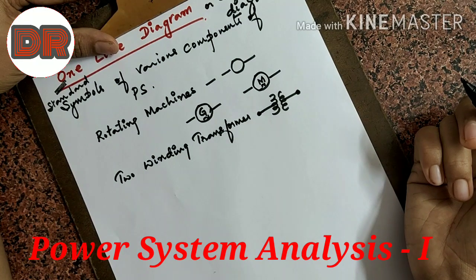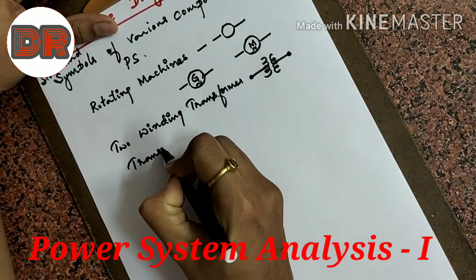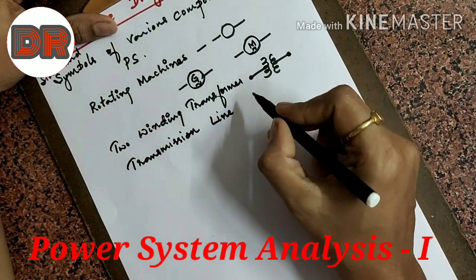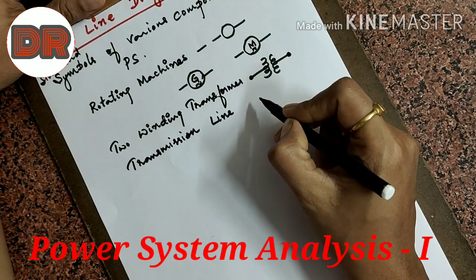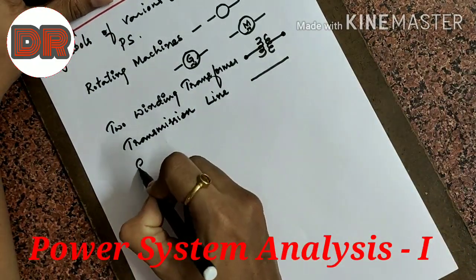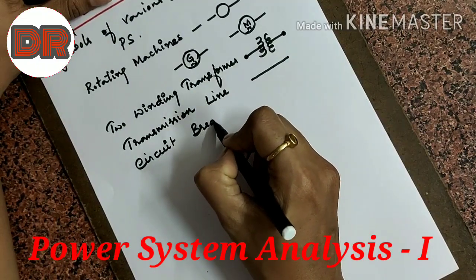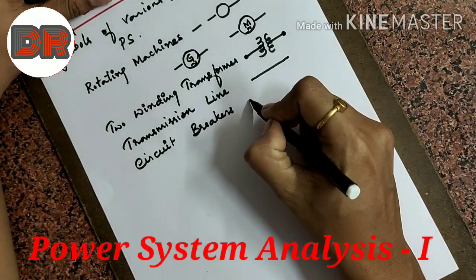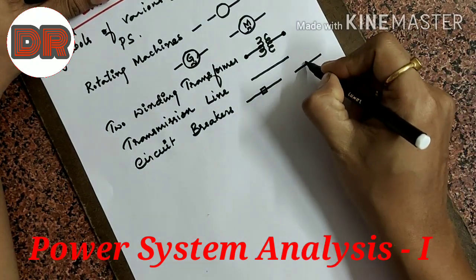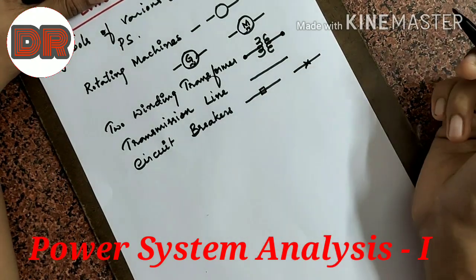Next we have the transmission line. For transmission line, the symbol used in a single line diagram is a straight line. For circuit breakers, we use either a small box or a cross symbol. Wherever circuit breakers are present, we can represent them with these symbols.